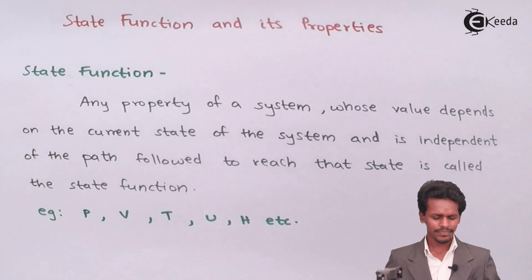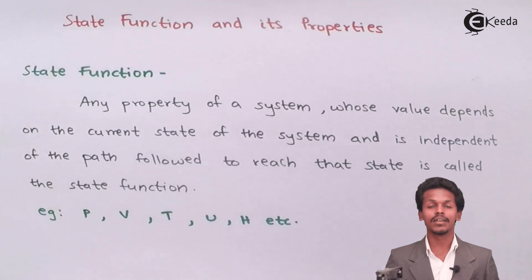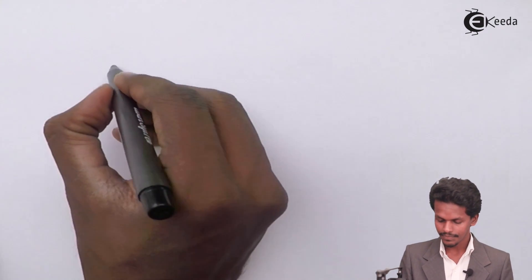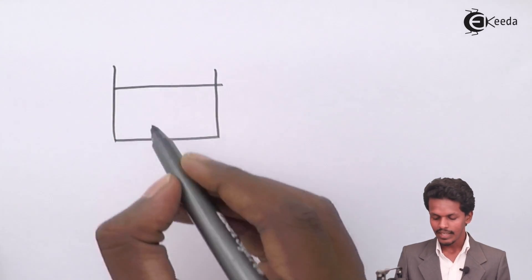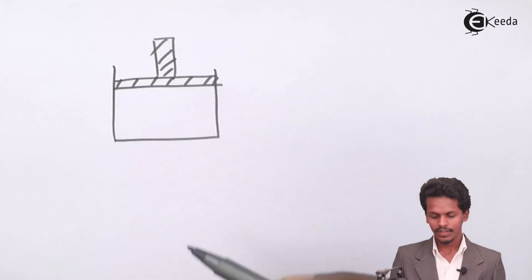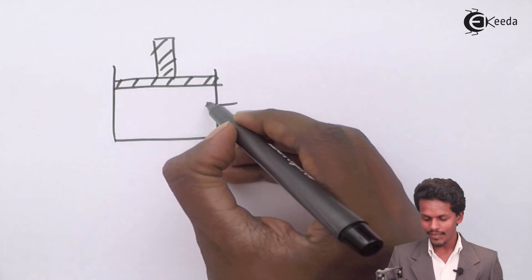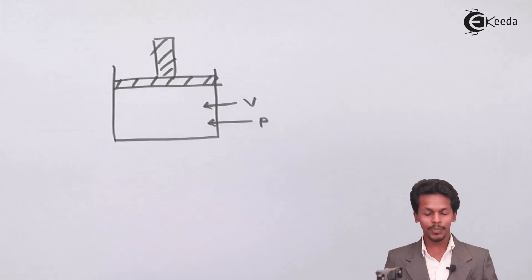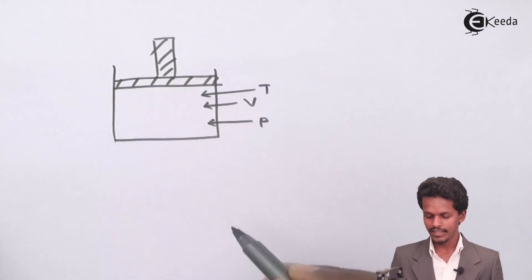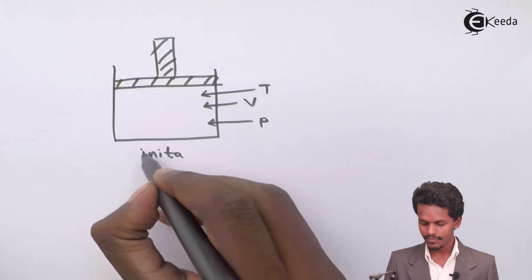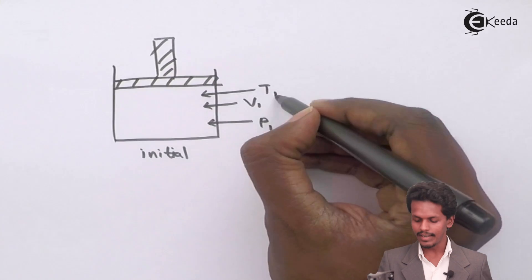Let me give you an example: suppose a gas has been enclosed in a container through a piston. The gas will have a particular volume V, a pressure P, and a temperature T. In the initial case, let me name them as P1, V1, and T1.